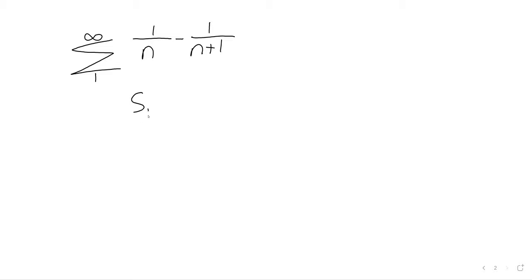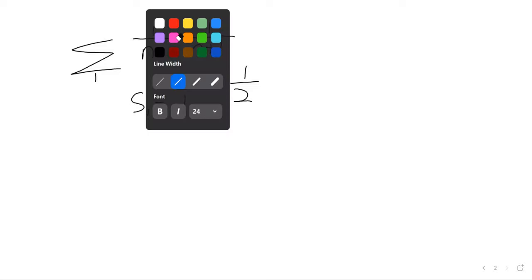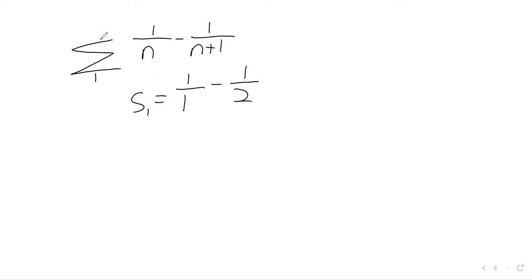We look at the partial sums. Remember what these partial sums are. S sub one is what you get if you erase that infinity symbol and replace it with one. S sub two is what you get if you erase this infinity symbol and replace it with two. And S sub two is, well, we've got the one term. And now we get one over two minus one over three.